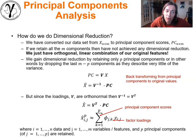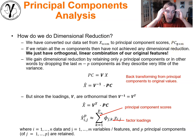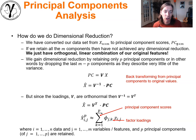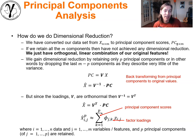How do we accomplish dimensionality reduction? So far we've converted our original standardized centered x (n by m) matrix into principal component scores — still n by m — no dimensionality reduction yet. If we retain all m components we haven't achieved dimensional reduction; we just have an orthogonal linear combination of original features, and in fact those scores lose their physical meaning.